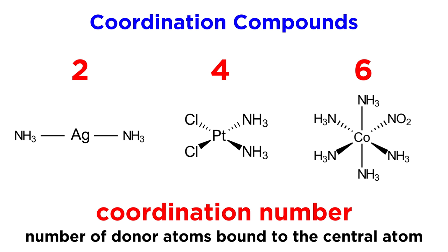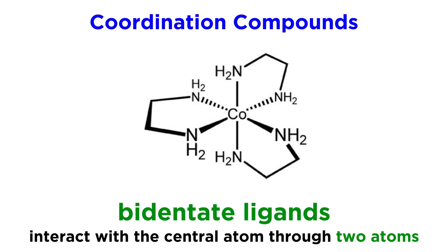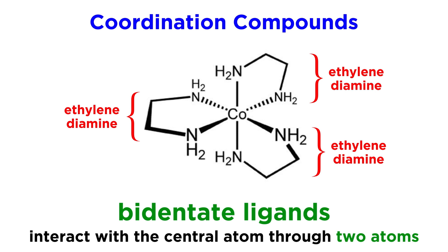The coordination number is the number of donor atoms that are bound to the central atom in the complex, so that would be two, four, and six for these three complexes respectively. With these situations, all the ligands are monodentate ligands, meaning they interact with the central atom through one atom only. Ligands can also be bidentate, such as ethylenediamine, whereby both the nitrogen atoms on each ligand will interact with the metal atom. So in this case, even though there are three ligands, the complex has a coordination number of six.